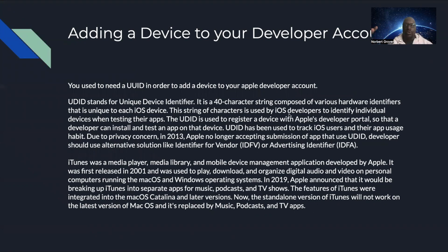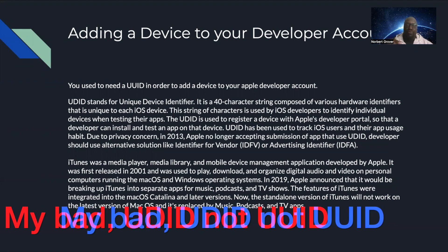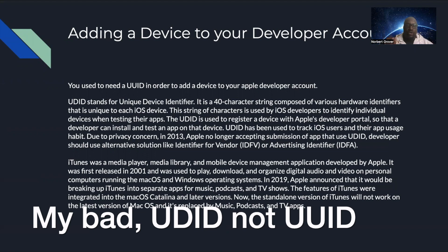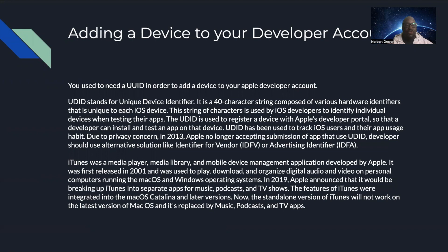Before recently, you used to need a UDID — not a UUID, that was a typo — a UDID, which stands for Unique Device Identifier. It's a 40-character string composed of various hardware identifiers that is unique to each iOS device. This string is used by iOS developers to identify individual devices when testing their apps, and it's used to register a device with Apple's developer portal so that a developer can install and test an app on that device.